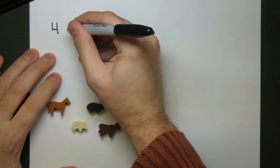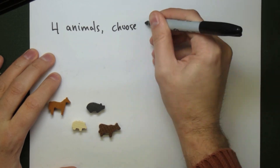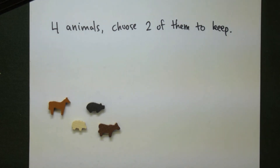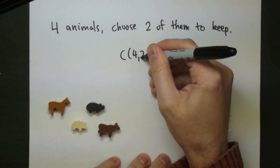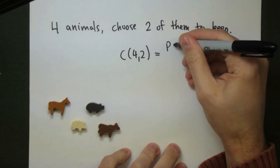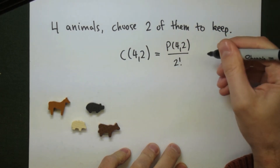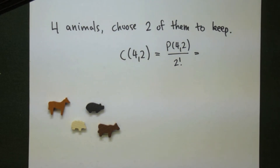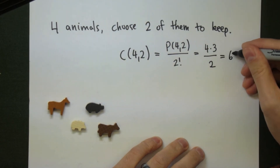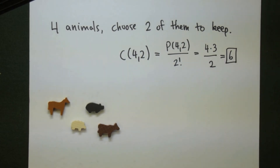Let's look at an example. Say we have four animals and we're allowed to choose two of them to keep — the other two we have to give away to a nice home. In this case, the order doesn't matter; it doesn't matter if I choose one to keep first or second, I'm just keeping two of the animals. So I'm going to use a combination: C(4,2). Out of my four animals, I want to choose two, and the order doesn't matter. Using the formula, this is P(4,2) divided by 2 factorial — that's 4 times 3 over 2 — which gives me 6. There are six ways to choose two of my animals.